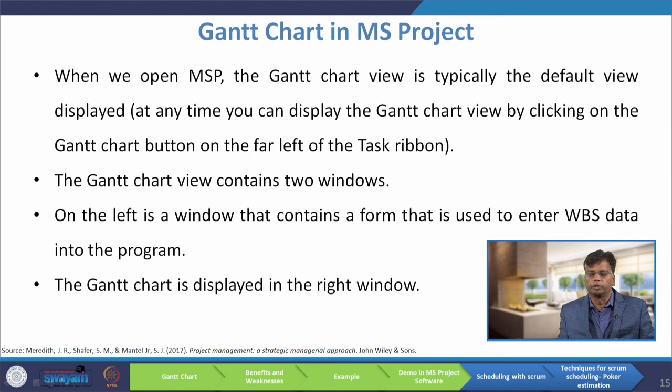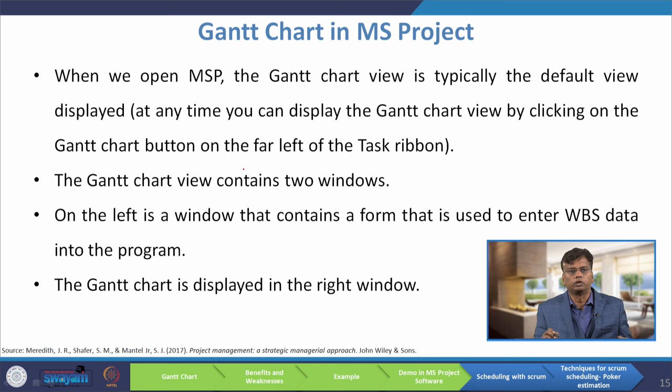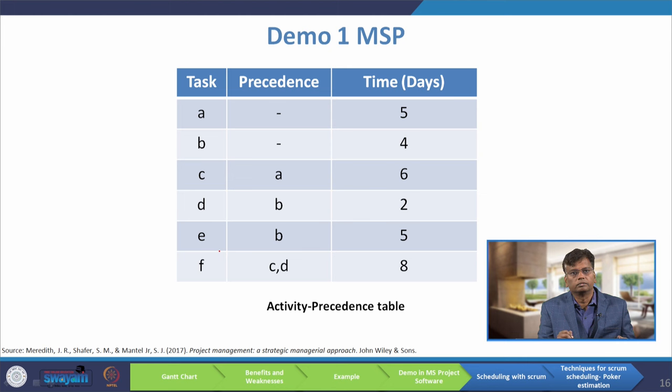Now I will explain how to use the Gantt chart in MS Project software. When you open MS Project, the Gantt chart view is typically the default view. The left window contains a form for entering work breakdown structure data, and the Gantt chart is displayed on the right. I have taken a sample problem with activities A, B, C, D, E, F, their precedence diagrams, and time durations. I am going to construct the Gantt chart for this problem.